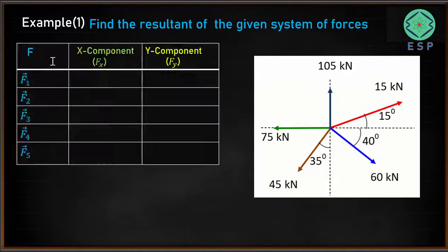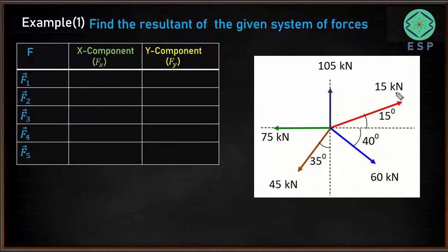We will start by making a table. We list down all the forces F1, F2, F3, F4, F5 and then their x and y components. Let me label this force as F1, this force as F2, this one as F3, this one as F4, and this one as F5. So we have got 5 forces.